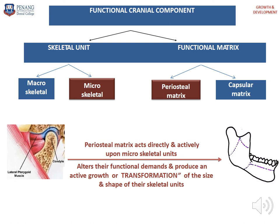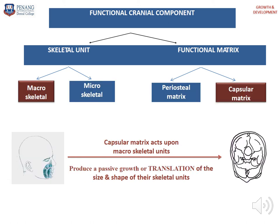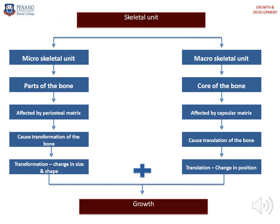The periosteal matrix acts directly and actively upon micro-skeletal units; therefore, it can alter functional demands and produce active growth or transformation of the size and shape of their skeletal unit. The capsular matrix acts upon macro-skeletal units and produces passive growth or translation of the size and shape of their skeletal unit. In summary, this is how micro-skeletal and macro-skeletal units react in order to produce growth.